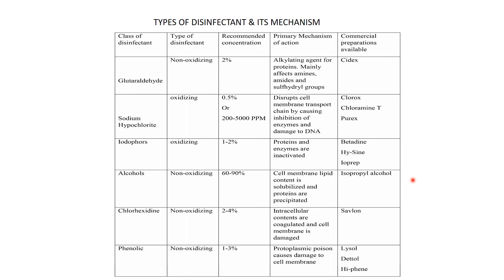Chlorhexidine is non-oxidizing, used at 2 to 4 percent concentration. It disrupts intracellular contents and damages the cell membrane. Savlon is the well-known commercial example.